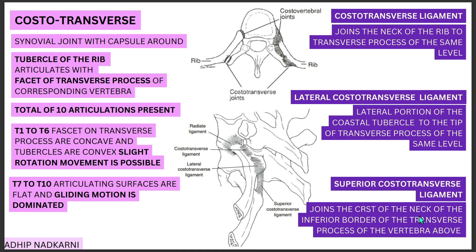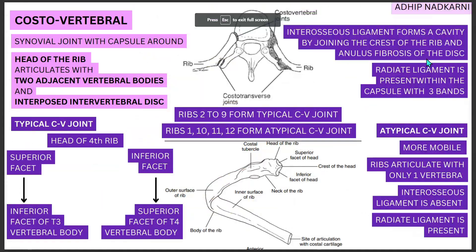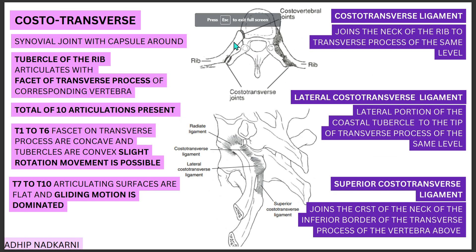To summarize: we started with ribcage articulations. The costochondral, costo-sternal, and interchondral joints will be covered in the next video. The manubriosternal and xiphisternal joints are synchondroses that ossify late. The costovertebral joint involves the rib articulating with the vertebral body, and the costotransverse joint involves the rib articulating with the transverse process. That's all for today — thank you for watching.